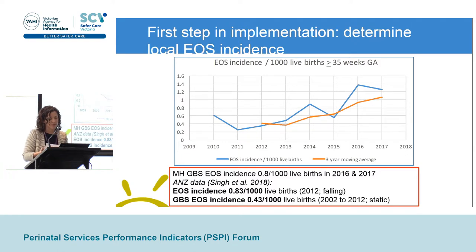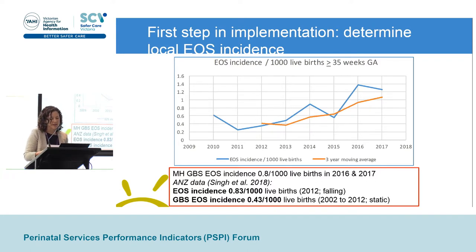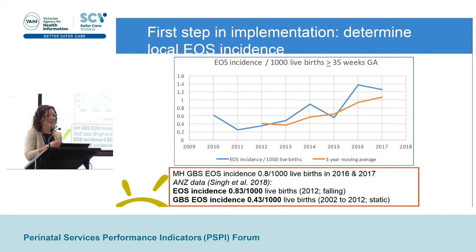Looking at Australia and New Zealand data from 2002 to 2012, the incidence overall settled at 0.83 per thousand live births and was falling over the prior decade. GBS accounted for about half of those cases. The sepsis calculator does not impact baseline early onset sepsis incidence — the only effective way to impact that is through an effective intrapartum antibiotic prophylaxis policy. With the introduction of GBS screening, it will be interesting to see what happens to our incidence over time, and we will review this, as a lower incidence will result in fewer babies needing intervention.